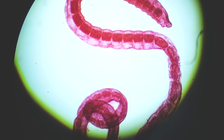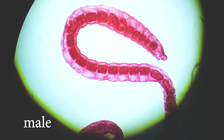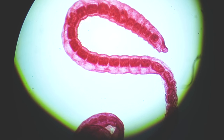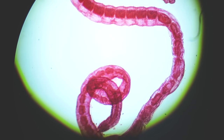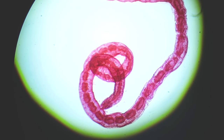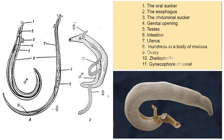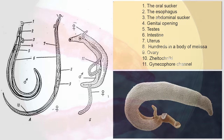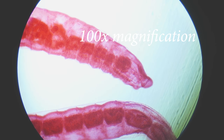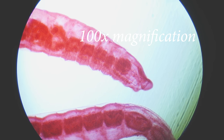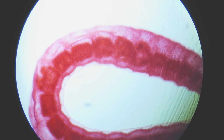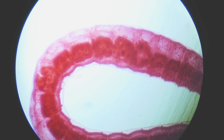Adult flatworms parasitize blood capillaries of either the mesenteries or plexus of the bladder, depending on the infecting species. They are unique among trematodes and any other flatworms in that they are dioecious, with distinct sexual dimorphism between male and female. Thousands of eggs are released and reach either the bladder or the intestine according to the infecting species, and are then excreted in urine or feces to fresh water. Larvae must then pass through an intermediate snail host before the next larval stage of the parasite emerges, which can infect a new mammalian host by directly penetrating the skin.